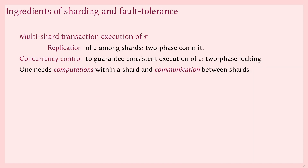Typical systems process a multi-shard transaction using two techniques. First, we need a replication method to replicate the transaction among all involved shards. For this, we can use two-phase commit. Second, we need a concurrency control method to assure a consistent execution of transactions that are processed in parallel by several shards. For this, we can use two-phase locking.